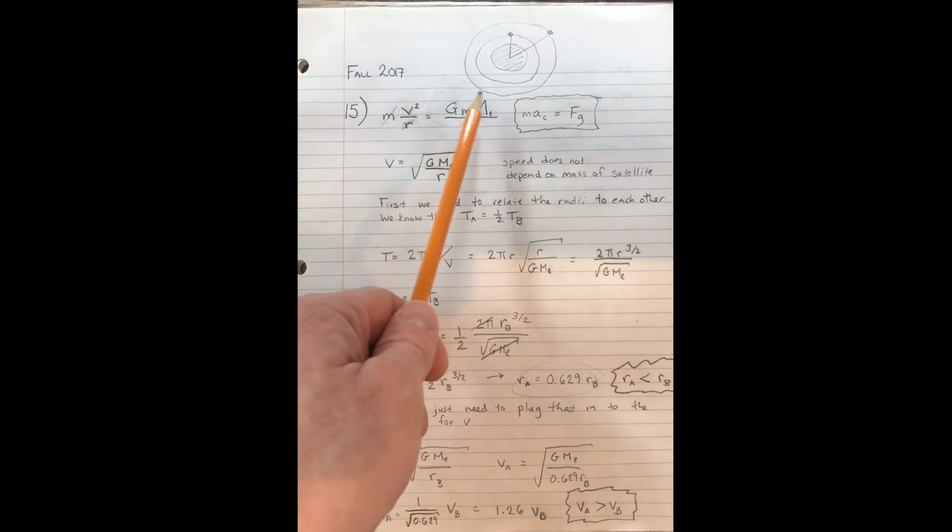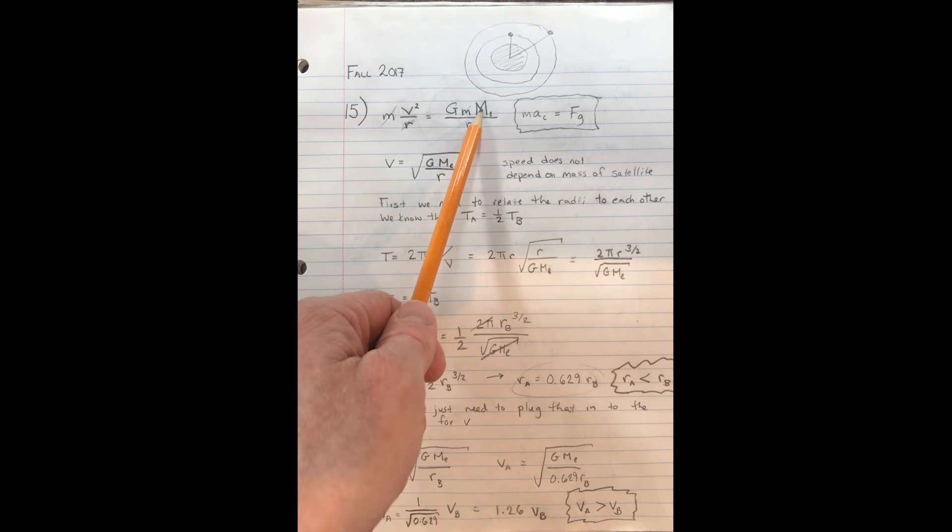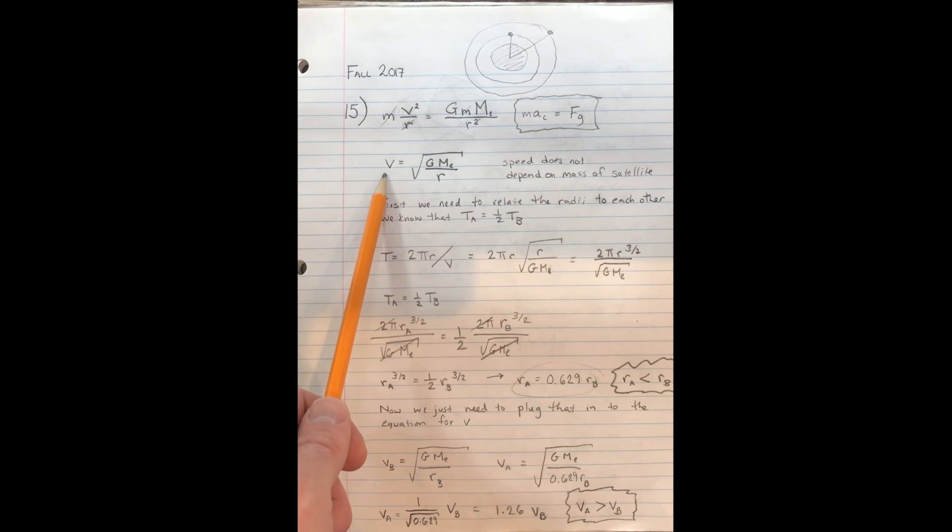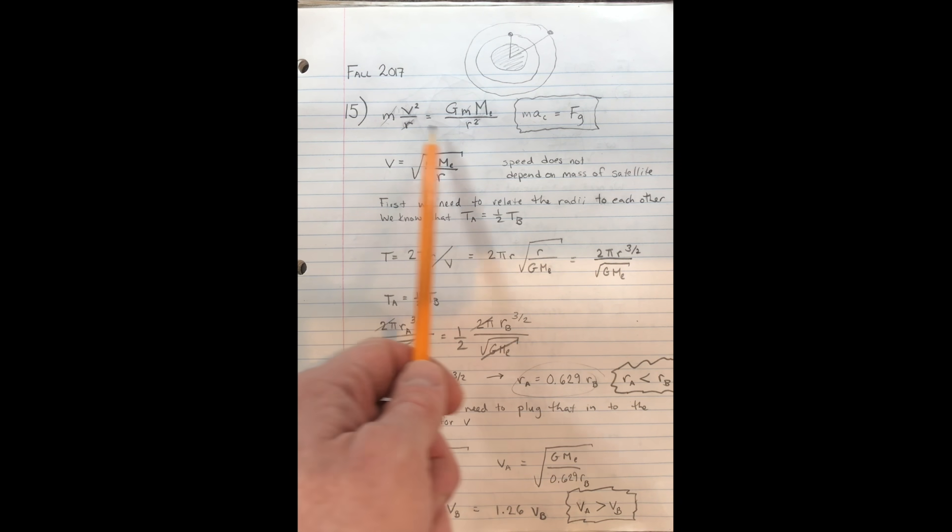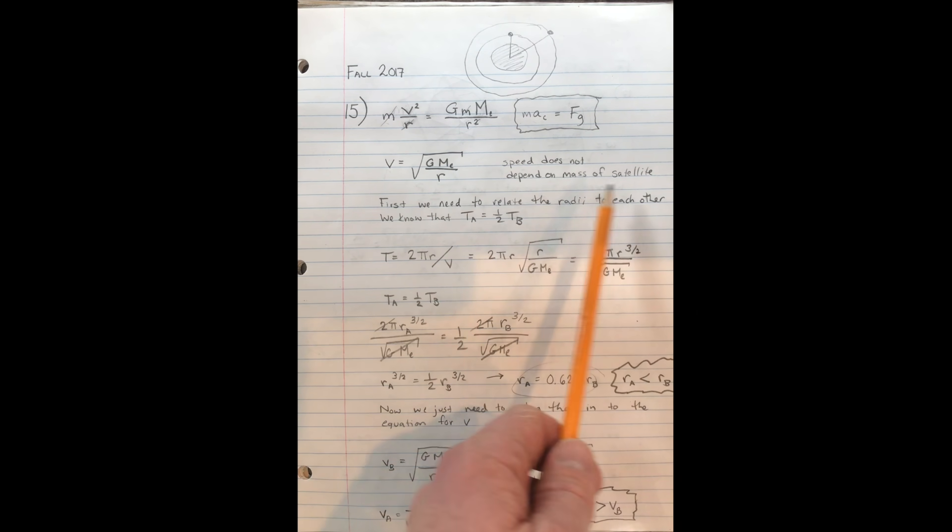If we take this equation, we'll notice that the m's cancel. That's nice. One of the r's cancels, and then we get v squared equals GME over r. Therefore, v equals the square root of GME over r. So the first and important thing to notice is that the mass of the satellite is irrelevant to the speed, and so the fact that satellite A has twice the mass is a red herring. The speed does not depend on the mass of the satellite.